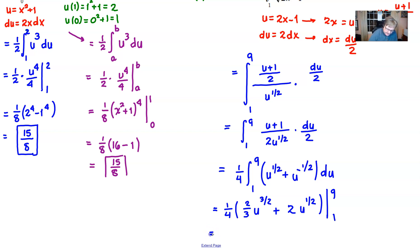Let's go ahead and keep this 1 fourth out in front what do you say and then I have 2 thirds times well when you plug 9 in and take 9 to the 3 halves that's the same thing as the square root of 9 which is 3 cubed which is a 27. Do the same thing here the square root of 9 is 3.